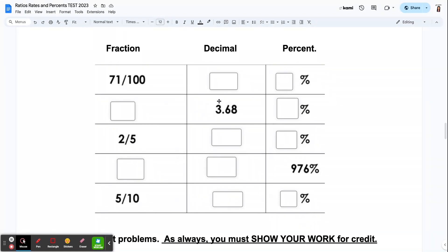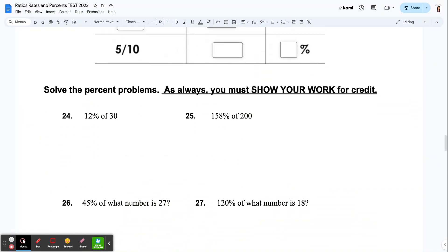If I say 3 and 68 hundredths, what is that as a fraction and a percent? If I say two-fifths, what is that as a decimal and a percent? If I give you the percent, 976 percent, what would that be as a fraction and a decimal? And then if I give you five-tenths, what's that as a decimal and as a percent?